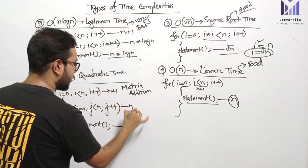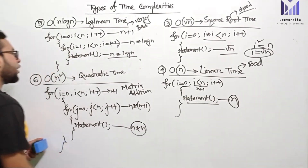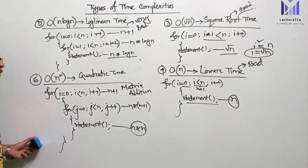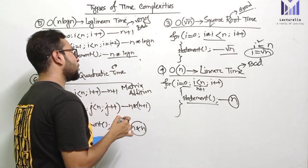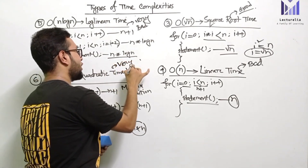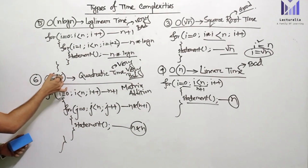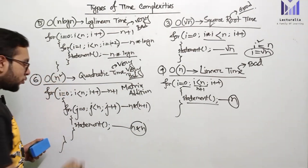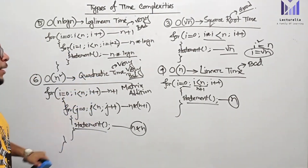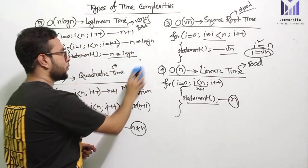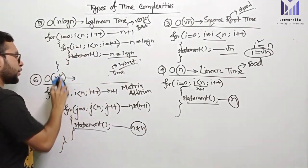This nested loop gives us n-squared time — quadratic time, order of n-squared. The input size n determines the run time in the same way — execute the same way, run time is n-squared, which is very bad. Next is cubic time, order of n-cubed.